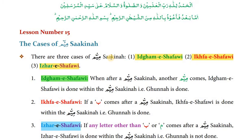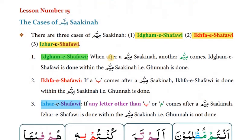Let's summarize lesson number fifteen. We learned the three cases of Meem Sakinah: Idghaam Shafawi, Ikhfa Shafawi, and Izhaar Shafawi. What is Idghaam Shafawi? When a Meem comes after a Meem Sakinah, Idghaam is done. What is Ikhfa? If Ba comes after a Meem Sakinah, Ikhfa Shafawi will be done. And if any other letter other than Ba or Meem comes, Izhaar will be done.